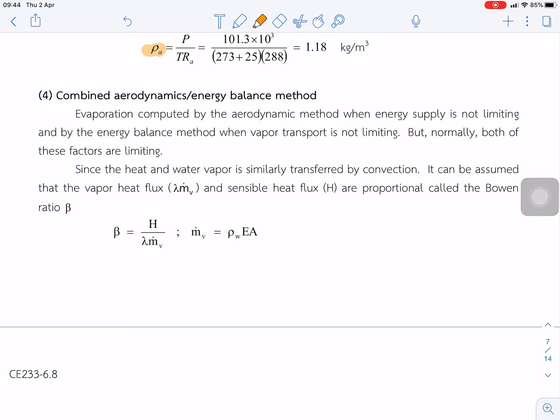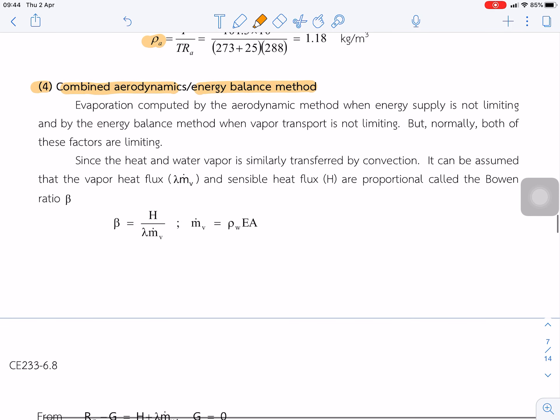The next method is the fourth method we call the combined aerodynamics and energy balance method. Why we have to use this? Because both methods have limitations. For the aerodynamics method, we assume that energy supply is not limited.